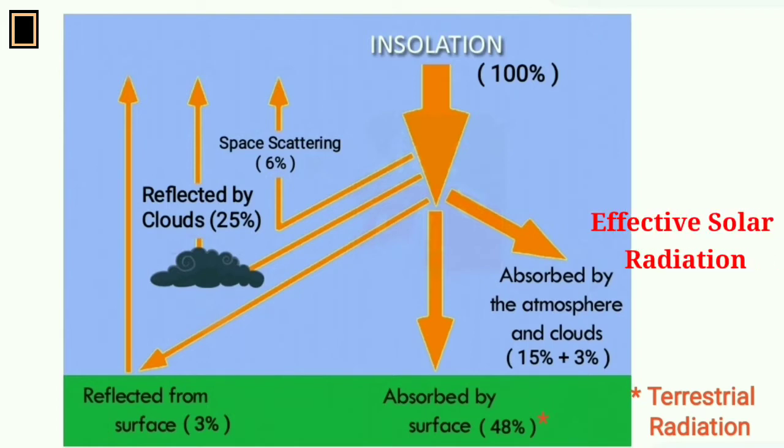Among 66%, 18% is absorbed by atmosphere and cloud. 48% is absorbed by earth's surface which is almost entirely reflected back at night. That is known as terrestrial radiation.